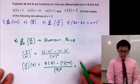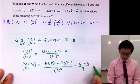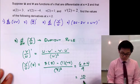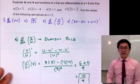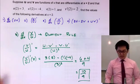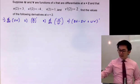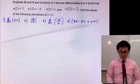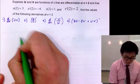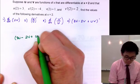Simplifying our fraction, we get 3 times 2 minus 1 times (-4), all over 9, which is 6 plus 4 over 9, giving us 10/9. So that's the derivative for problem number 3. For the last problem, we have 3u minus 2v plus uv, and we're going to find its derivative using the derivative rules.